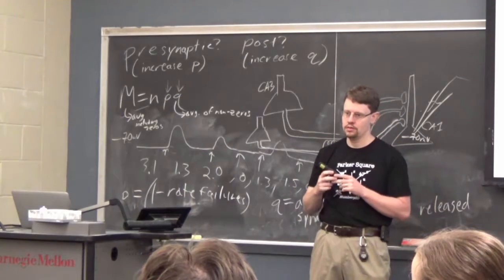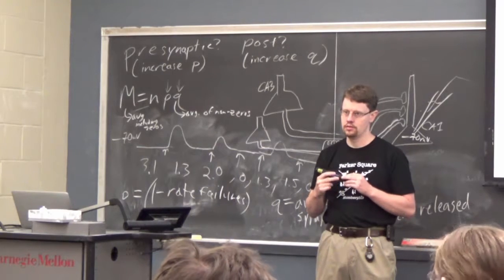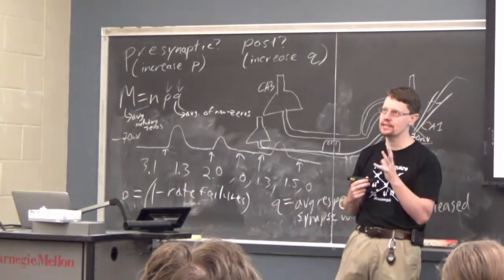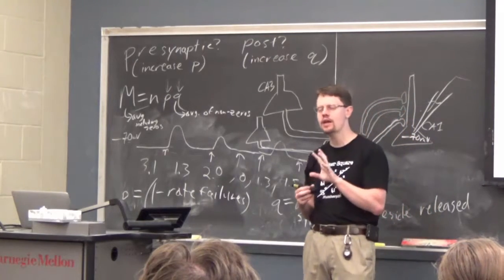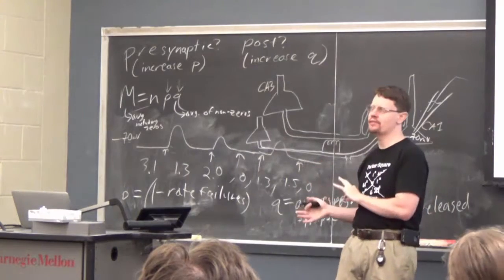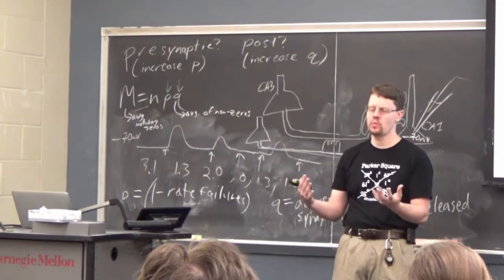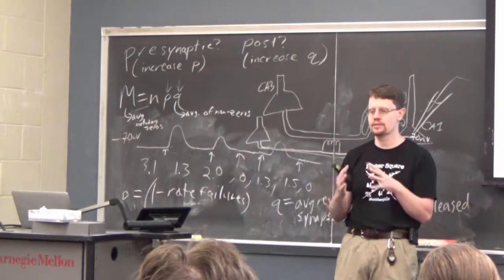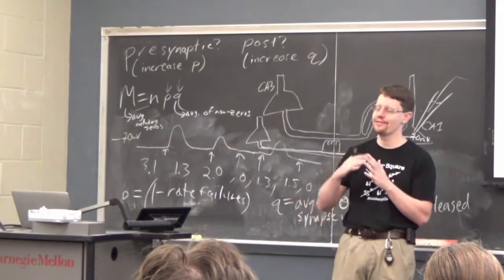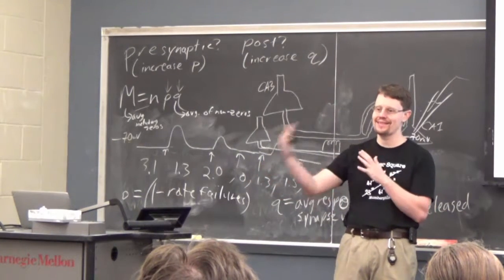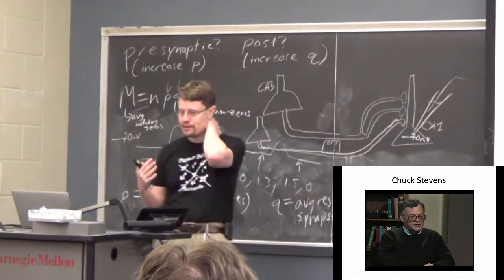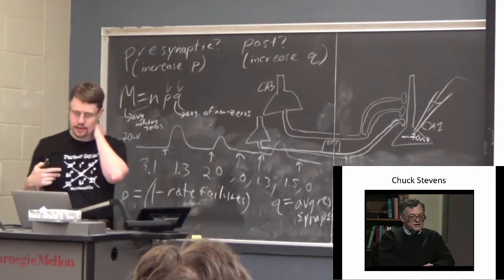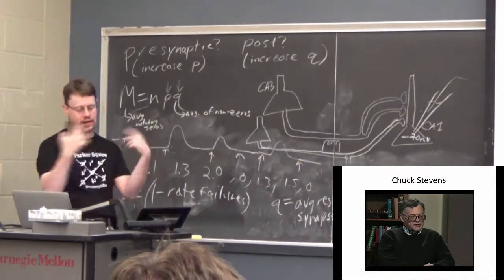Is there always a maximum of one vesicle released per synaptic terminal? We're going to say yes. That's something that in the last 8 to 12 years has begun to be debated again. But for our purposes it kind of doesn't matter, because if two are released at the same time, there's so much neurotransmitter in one vesicle that we'd saturate our receptors — so it kind of doesn't matter here. We're just going to say yes: either a vesicle comes out or it doesn't.